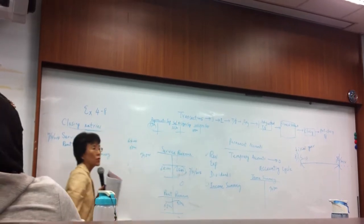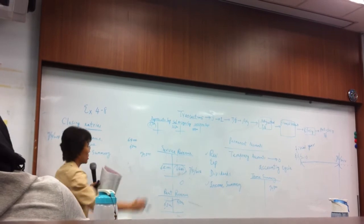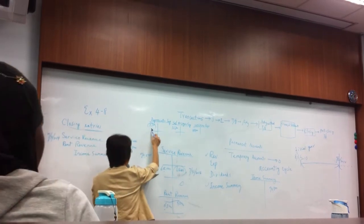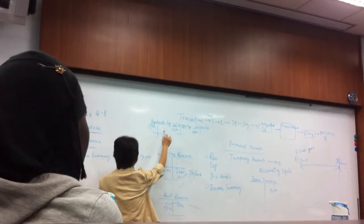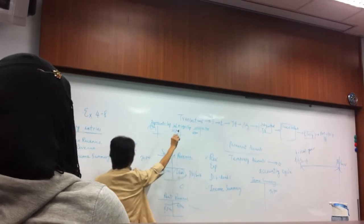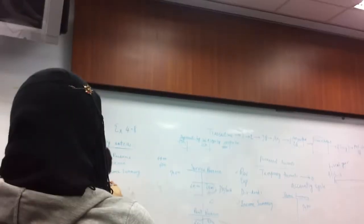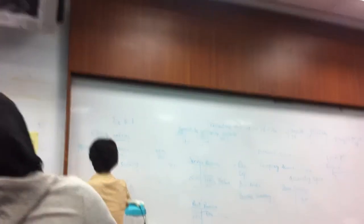So now what do we do here to close these expense accounts? You can see it's kind of reverse because you have the balance on the other side. If you want to make this become zero you have to put something on the credit side. So just depreciation expense.